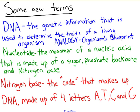The first definition is DNA. Formally, DNA is the genetic information that is used to determine the traits of a living organism. The analogy I'm going to use is that DNA is the organism's blueprint — it is the instructions on how to make something. DNA is the instructions found within a cell; however, you're going to need proteins and processes to carry out those instructions.